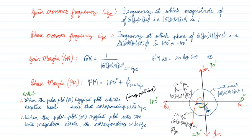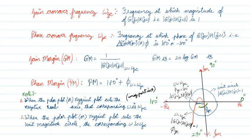Then what is phase crossover frequency? The frequency at which the phase angle is 180 degrees. I can represent it by angle sign or symbol phi. The frequency at which it becomes minus 180 degrees is called the phase crossover frequency, omega_pc.